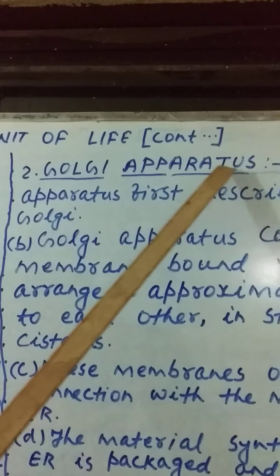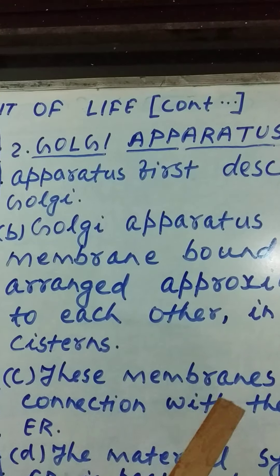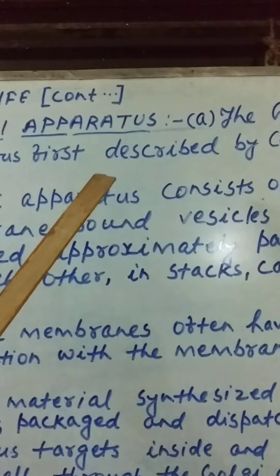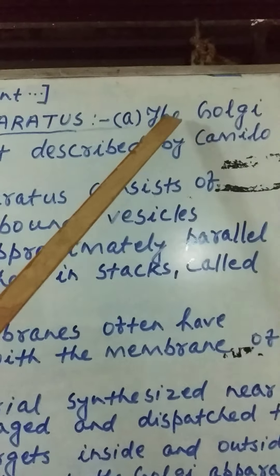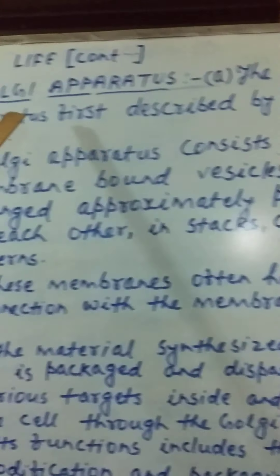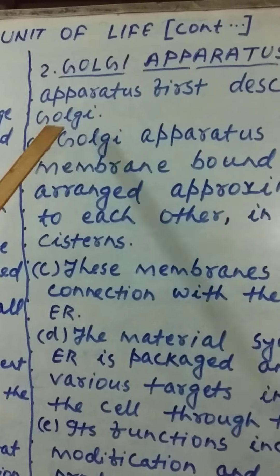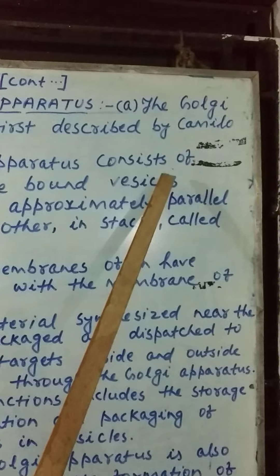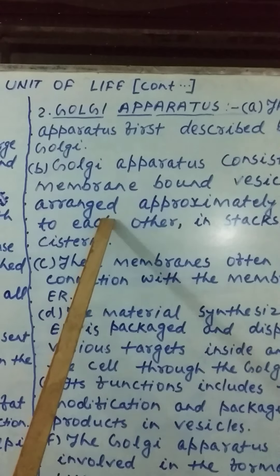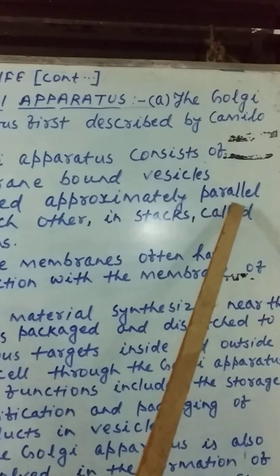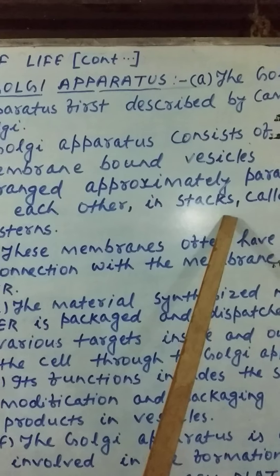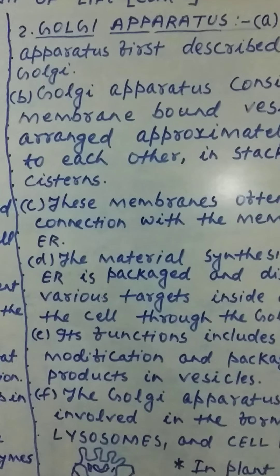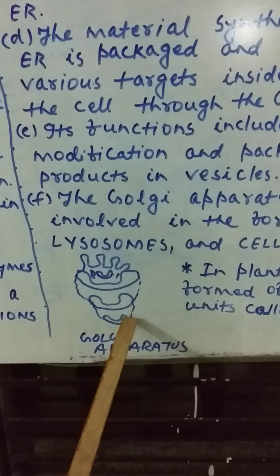In the next cell organelle, it is also important. You must remember all these characteristic features. First point: the Golgi apparatus was described by Camillo Golgi. Second, the Golgi apparatus consists of membrane-bound vesicles arranged approximately parallel to each other in stacks called cisterns.